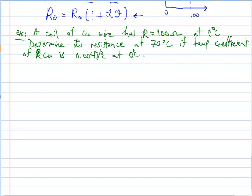Here is the example: A coil of copper wire has a resistance of 100 ohm at 0 degrees Celsius. Determine its resistance at 70 degrees Celsius if the temperature coefficient of copper is 0.0043 per degree Celsius at 0 degrees.